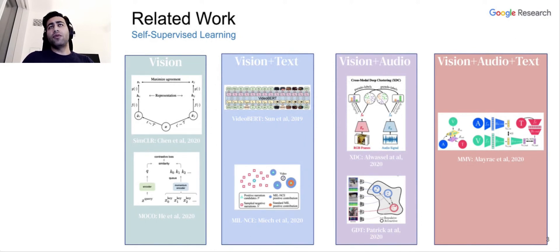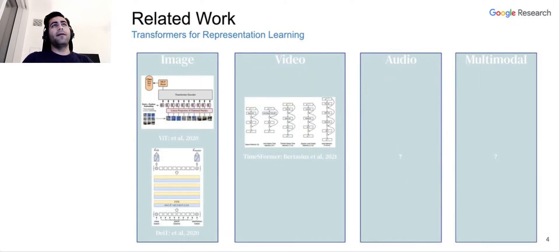So there are some related works in the literature, especially at the time of submission. There were a few works focused on vision self-supervised learning, vision plus text, vision plus audio, and very few work on vision plus audio and text. And on the transformer side, there's been a recent trend on utilizing transformers for other modalities and tasks than language understanding. This whole trend started by ViT, which was trying to do image classification using a plain transformer. It was extended to video. And at the time of this submission, there were no audio or multimodal transformers.